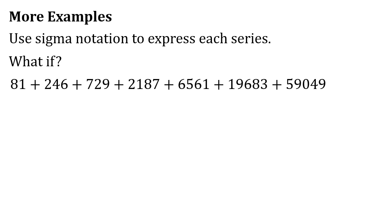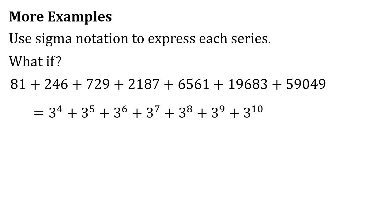What if the series starts from 3⁴ instead? It starts from 4 up to 10, so we have 3⁴ plus 3⁵ plus 3⁶ plus 3⁷ plus 3⁸ plus 3⁹ plus 3¹⁰. The formula is still 3 to the n, but the first value of n is 4 and the last value is 10. So the sigma notation is the sum of 3 to the n as n goes from 4 to 10.